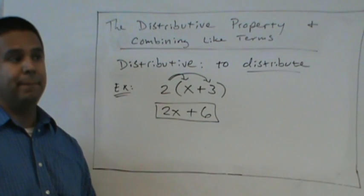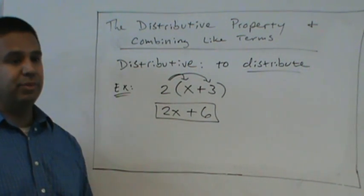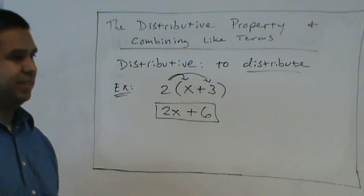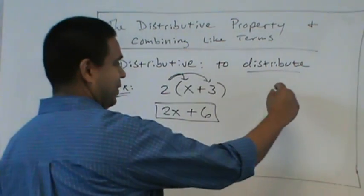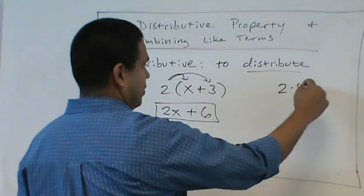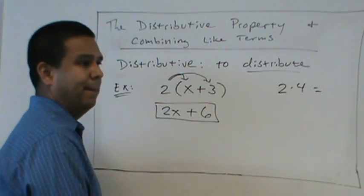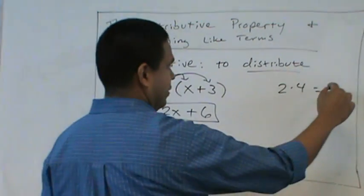We're good with that? Yeah? Now here's the real question. Why does this work? Let's go back to fundamentals. What is 2 times 4 equal? Eight. Do you know why it's 8?